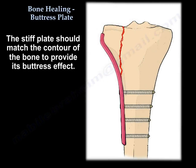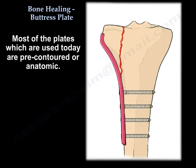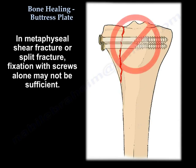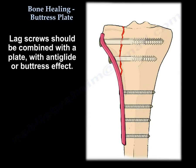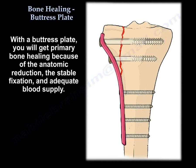The stiff plate should match the contour of the bone to provide its buttress effect. Most plates used nowadays are pre-contoured or anatomic. In metaphyseal shear fractures or split fractures, fixation with screws alone may not be sufficient — lag screws should be combined with a plate with an anti-glide or buttress effect. With a buttress plate, you will get primary bone healing because of the anatomic reduction, stable fixation, and adequate blood supply.